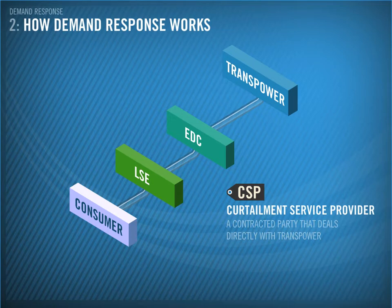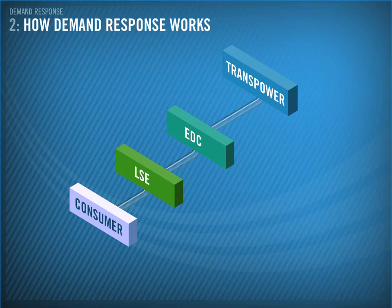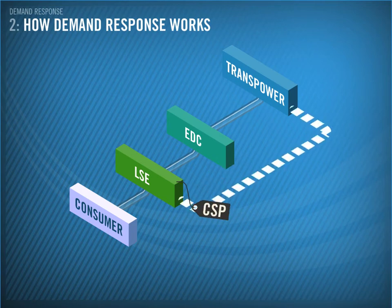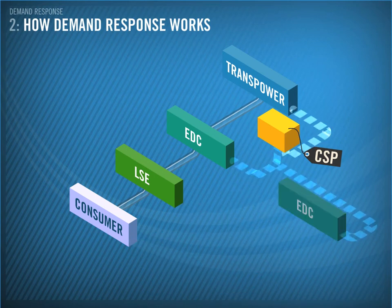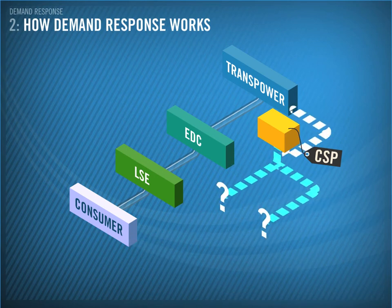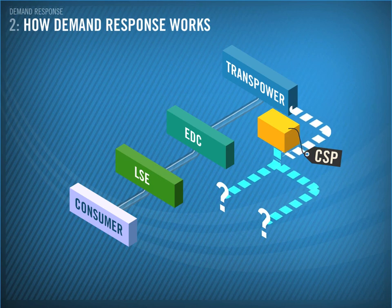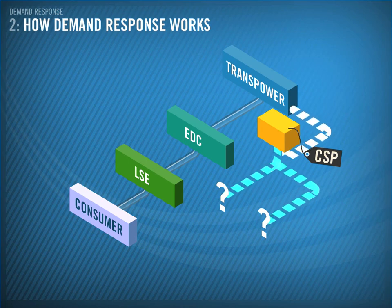Let's now look at the participants in our power system, how they interact, and where CSPs fit in. A CSP can be an electricity distribution company, a load-serving entity, a consumer, or an independent entity that combines any of these participants and acts as their agent. An example of this would be a facilities manager of a chain of supermarkets. Transpower will have contracted with one or many CSPs for a guaranteed response for an agreed amount of megawatts in a specific region.